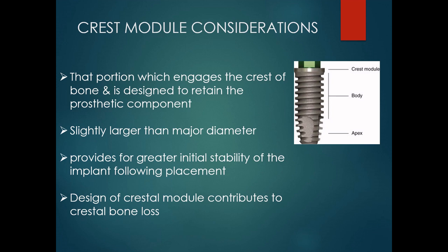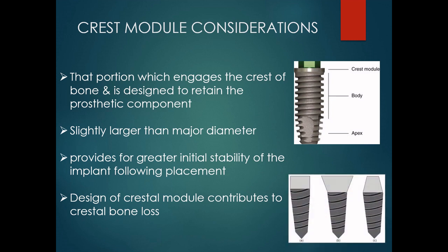The design of the crest module contributes to crest bone loss. There are three basic designs: parallel-sided, diversion, and conversion. Earlier there were polished collars to prevent plaque accumulation, but longer polished collars resulted in crest bone loss due to increased shear loading. Then they introduced micro-thread configuration onto the crest module, which improved bone formation and stress distribution for the implants.